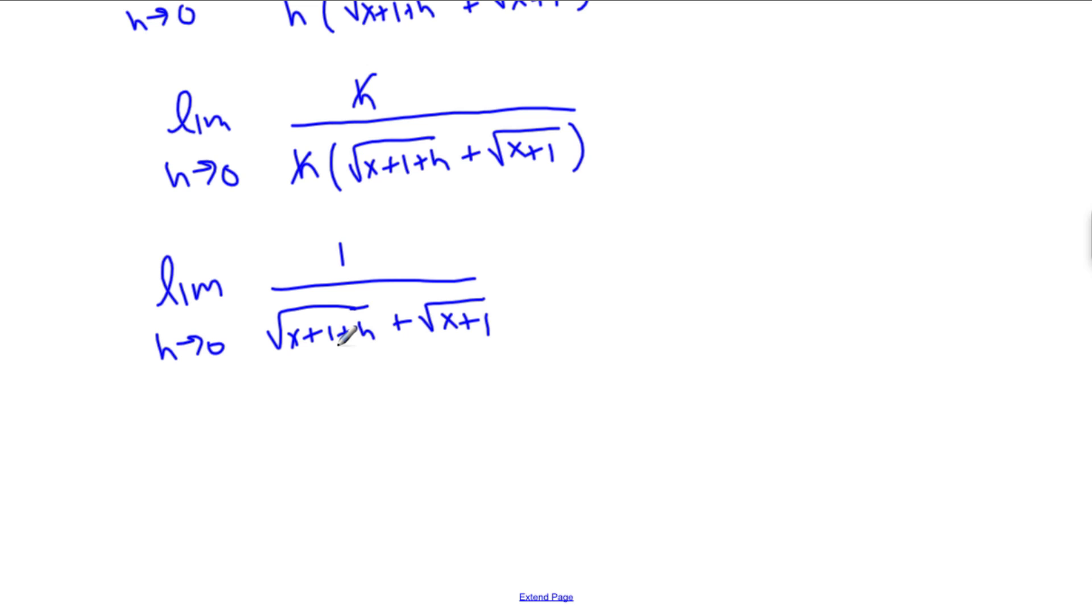And now we can plug in 0 because when we plug in 0 now for h, the denominator won't be 0. So if we plug in 0, you don't have to write the limit anymore. We'll get 1 over root x plus 1 plus root x plus 1, which you know to be 1 over 2 root x plus 1.